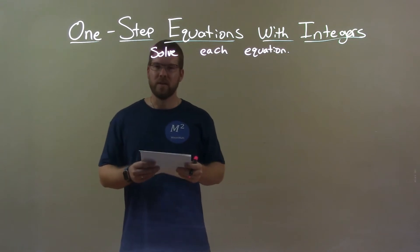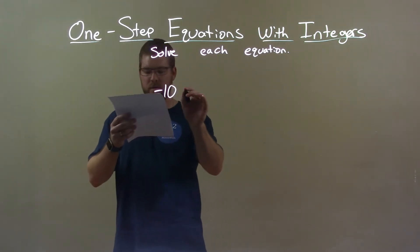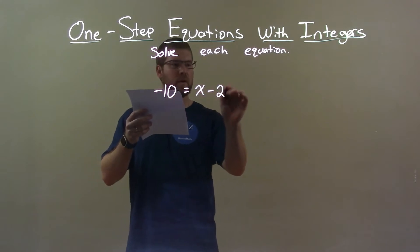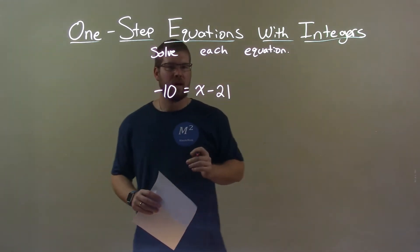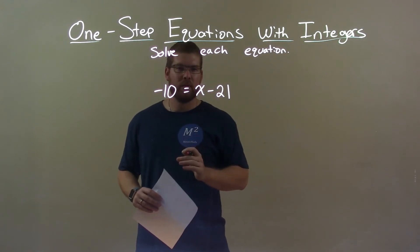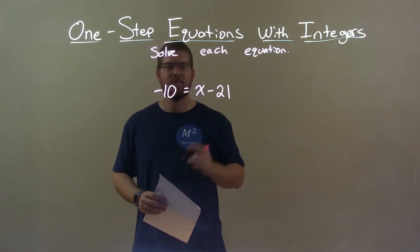If I was given this equation, negative 10 equals x minus 21. Alright, so I want to get x by itself. I have to subtract 21 right next to it. Opposite of subtraction is addition.